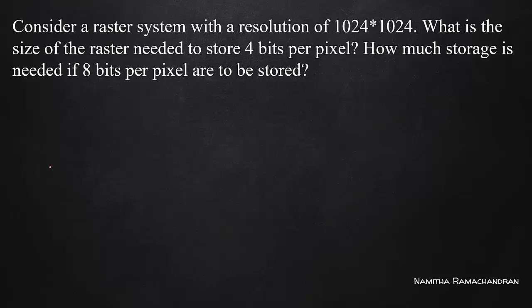Resolution refers to the number of pixels present on the display screen. If we consider the full display screen, the total number of pixels present is what we call resolution. For a particular scan line — that is, one horizontal line on the screen — we find out how many pixels are present. In this case, 1024 pixels per row.